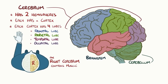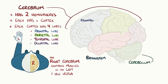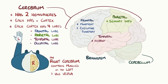The right cerebrum controls muscles on the left side of your body and vice versa. The frontal lobe controls movement and executive function, which is our ability to make decisions. The parietal lobe processes sensory information, which lets us locate exactly where we are physically and guides movement in a three-dimensional space. The temporal lobe plays a role in hearing, smell, memory, as well as visual recognition of faces and language. Finally, there is the occipital lobe, which is primarily responsible for vision.